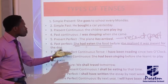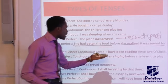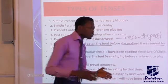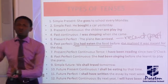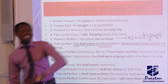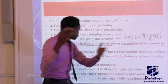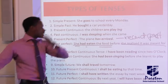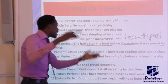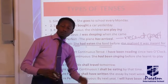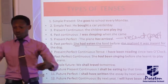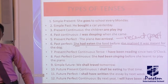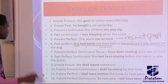The present perfect continuous tense refers to an action that started in the past and progressed into the present — for example, 'I have been reading since 2 o'clock.' The person is still reading now, but did not just start reading — they started reading in the past and have continued up to the present.